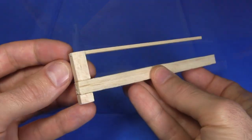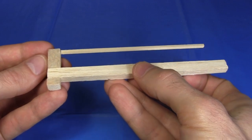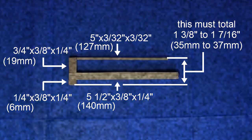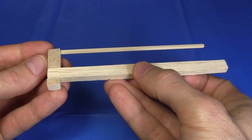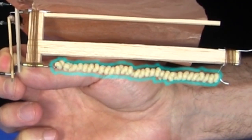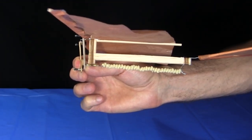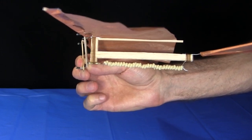The ornithopter's fuselage consists of four pieces of balsa wood. This piece is the motor support piece, and it's fairly thick. That's because the motor is a rubber band, and the motor support piece has to be strong enough to handle the tension that the rubber band puts on it.